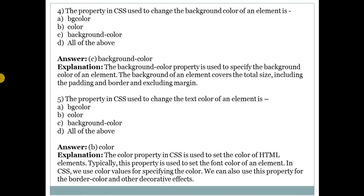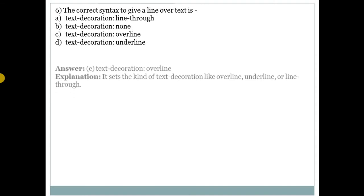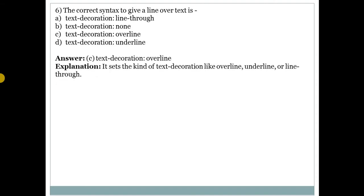Sixth question: the correct syntax to give a line over text? Answer is C — text-decoration with value overline. This sets the kind of text decoration — such as overline, underline, or line-through — applied to the text.